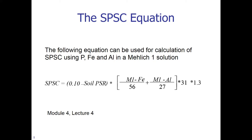Note that the SPSC can also be calculated using Mehlich-3 P, iron, and aluminum, but at this point I would express some caution in using Mehlich-3 P, iron, and aluminum in SPSC calculations for wetland soils. We have discussed the reasons in an earlier module.